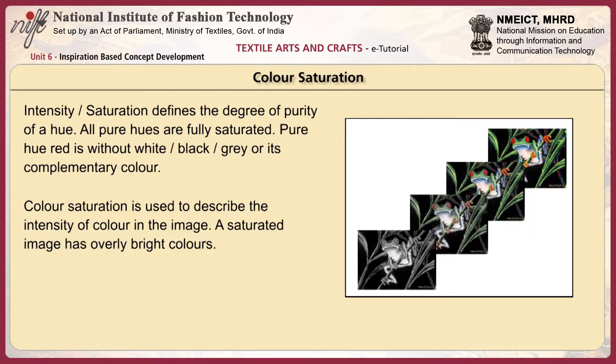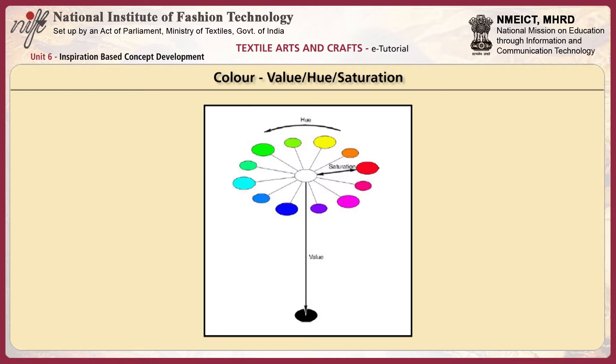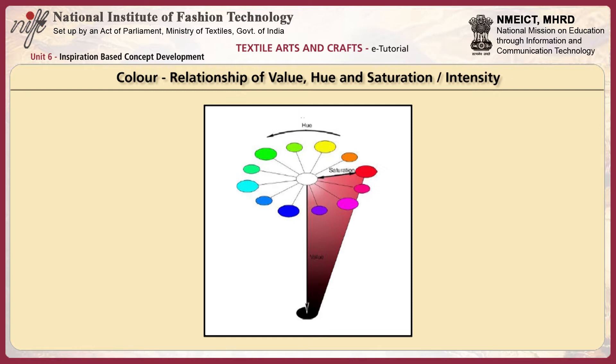Intensity or saturation defines the degree of purity of a hue. All pure hues are fully saturated. Pure hue red is without white, black, grey or its complementary color. Color saturation is used to describe the intensity of color in an image — a saturated image has overly bright colors. The relationship between value, hue and saturation or intensity is fundamental to understanding color.